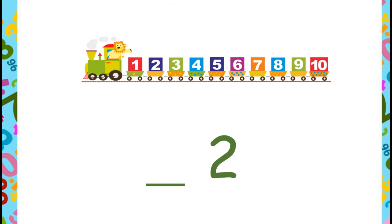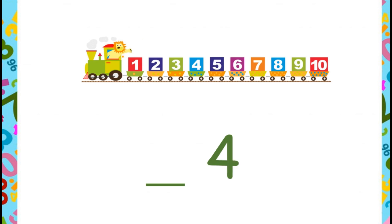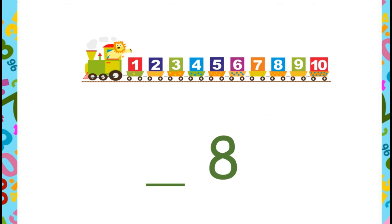What is the before number of 2? Yes, 1 is the before number of 2. Now let's find out the before number of 4. Yes, as 3 comes first, the before number of 4 is 3. Now can you find out the before number of 8? Correct — 7 is the before number of 8.